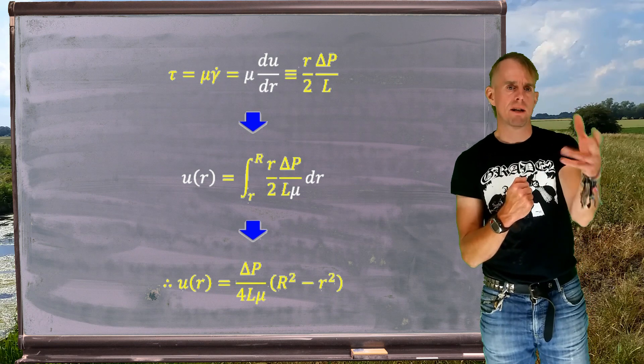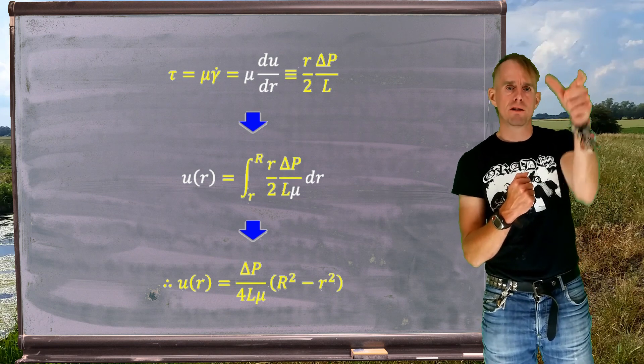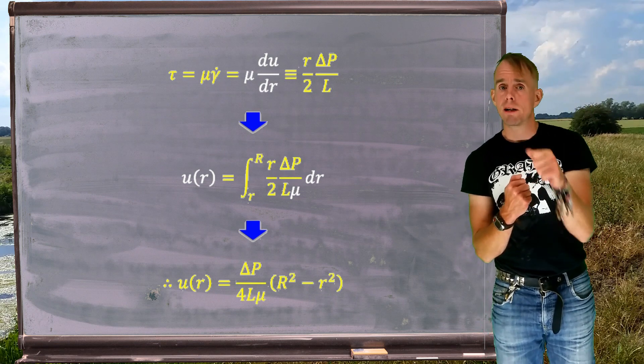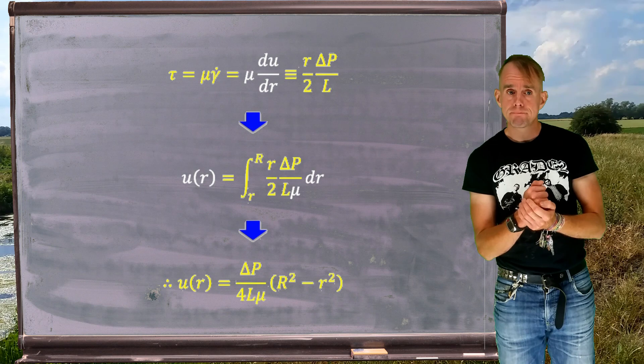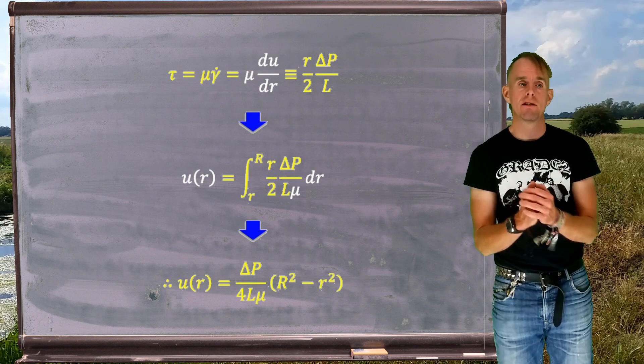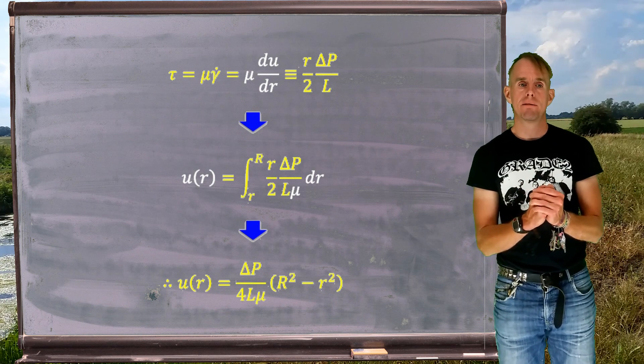We can rearrange that to have R² over r² minus 1, and we can see that it is indeed, as expected, parabolic.